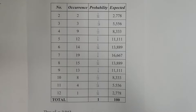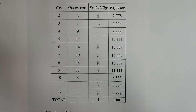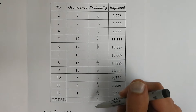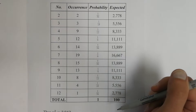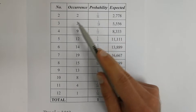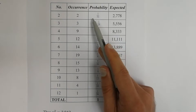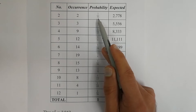The reason central numbers occur more often is that there are more combinations to achieve them. To get a 7 you can have 3+4, 4+3, 5+2, 2+5, 6+1, or 1+6. Whereas to get a 2 you only have 1+1. The probability values in this column are given as fractions — for example, the probability of rolling a 2 is 1 over 36, which we calculated in a previous exercise.